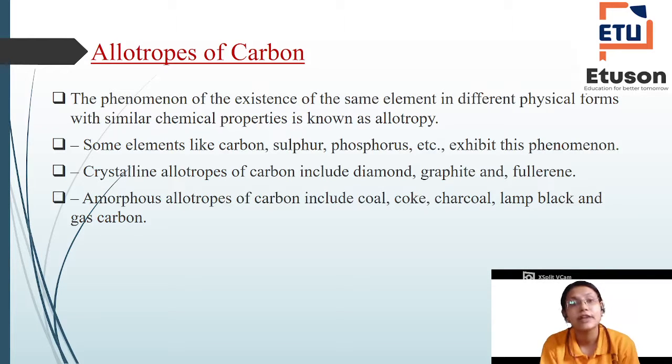What is allotropy? The phenomenon of existence of the same element having different physical but same chemical property is allotropy. A particular element which has different physical properties but same chemical property. Some elements like carbon, sulfur, phosphorus, etc. exhibit this phenomenon. Carbon, sulfur, and phosphorus exhibit this phenomenon.